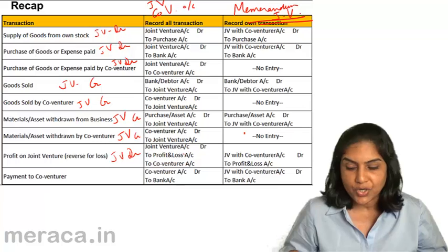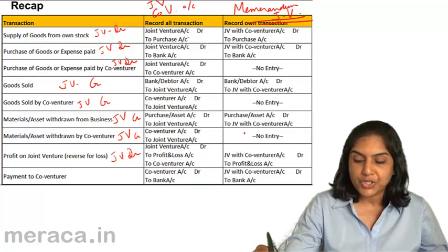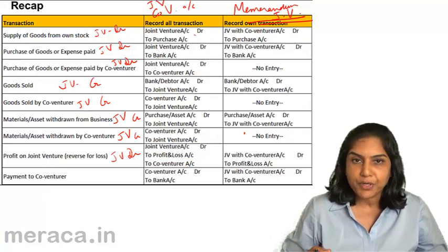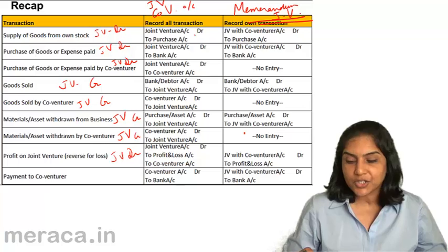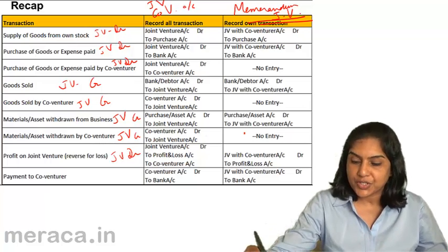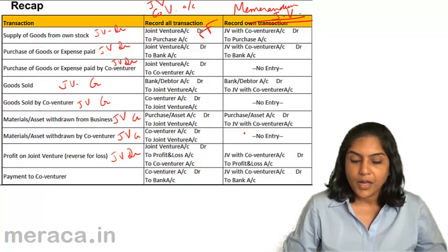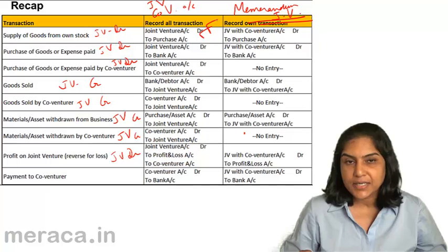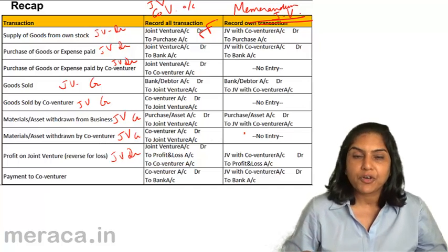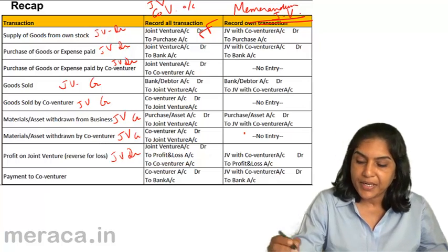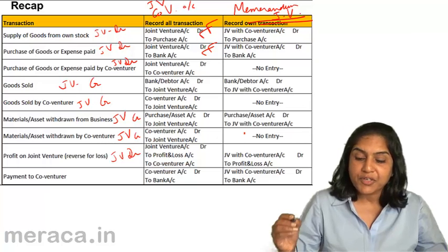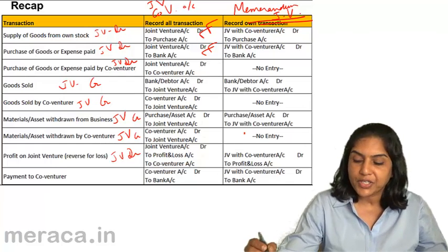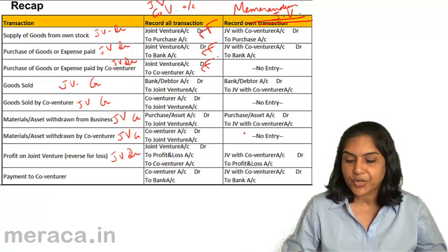Now the accounting entries when all transactions are recorded and no separate set of books is maintained for the joint venture. Supply of goods from own stock: Joint Venture Account debit to Purchases — assuming materials purchased are in our purchases account, when we take materials out for the purpose of joint venture. If we purchase goods or pay expenses — any money paid, buying an asset, buying materials for the joint venture — Joint Venture Account debit to Bank. If the same is done by Bikash, Aakash debits joint venture and credits Bikash's account.